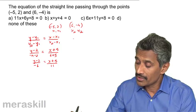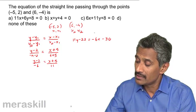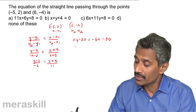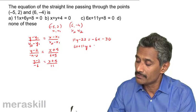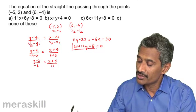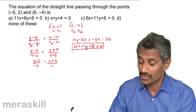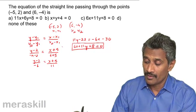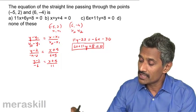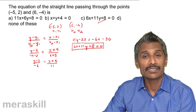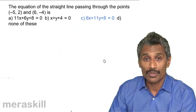Cross multiplying gives 11y minus 22 equals minus 6x minus 30. Rearranging: 6x plus 11y minus 22 plus 30 equals 0, so the equation of the required line is 6x plus 11y plus 8 equals 0. Among the options, the answer is C: 6x plus 11y plus 8 equals 0.